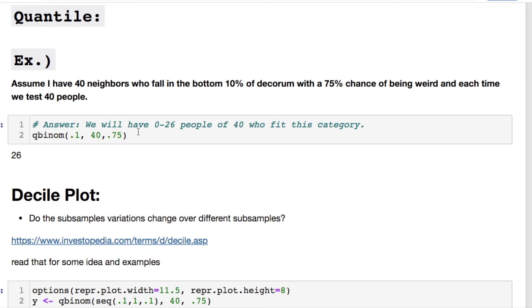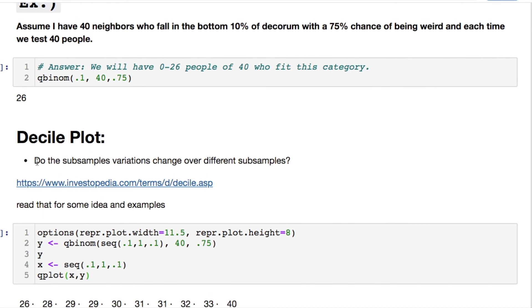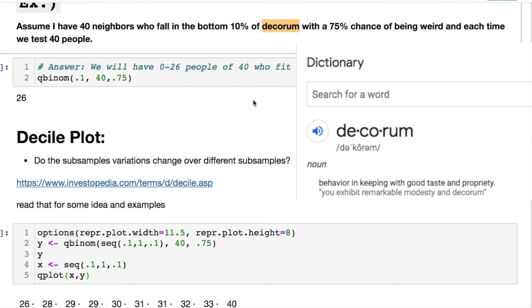So let's assume I have 40 people who fall in the bottom 10 percent of decorum with a 75 percent chance of being weird, and each time we test 40 people. That means that we have zero to 26 people of 40 who fit this category. And if you're not sure what this is, that's me just joking around again. Now the decile is something that's interesting.